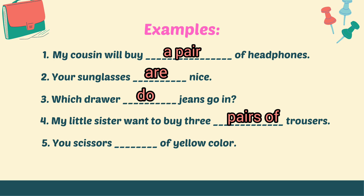Last example: Your scissors — are — of yellow color. We use 'are' and not 'is' here because scissors is in plural form. Your scissors are of yellow color. So in the end, what have we learned? These words are always in plural form.